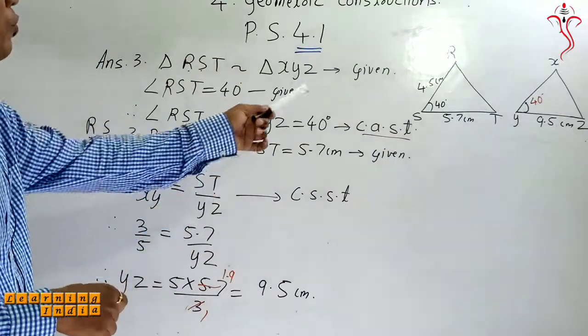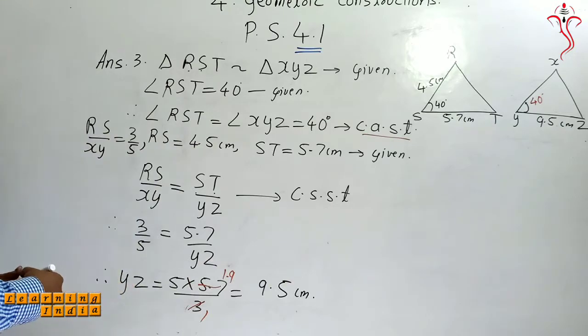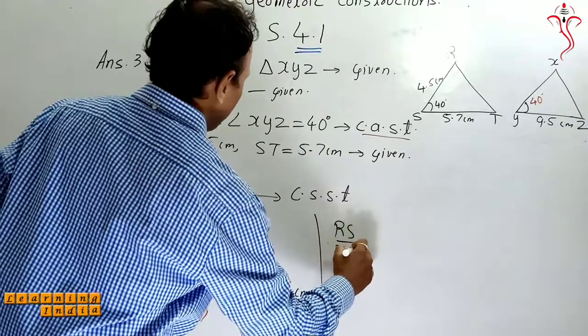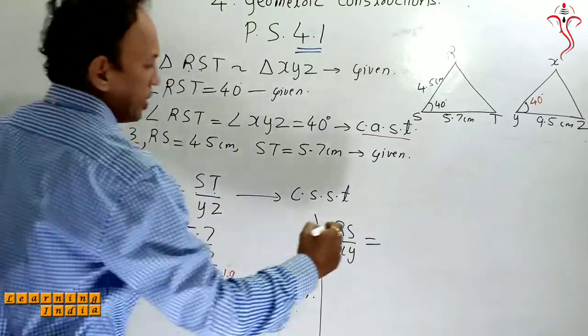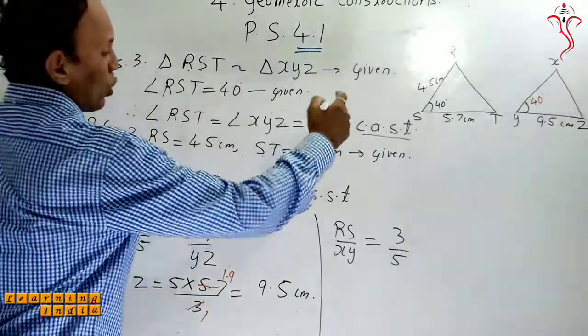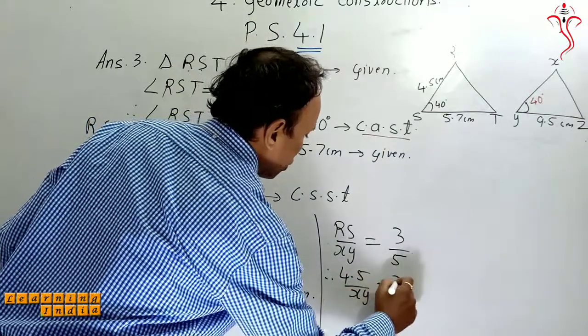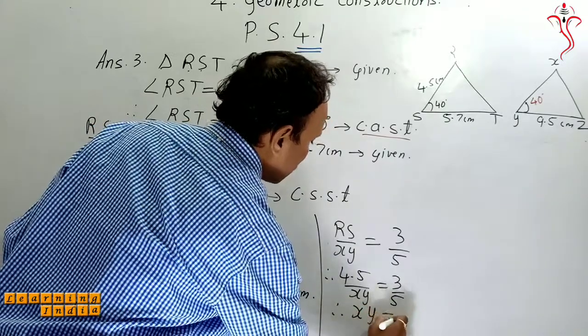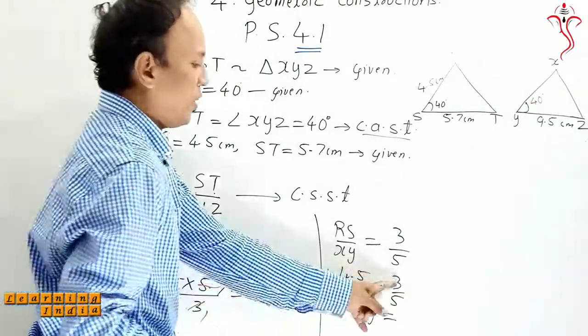So YZ value I am 9.5 cm. Now RS value, YZ value 4.5, RS value, XY what we have to do? We are taking RS upon XY is equal to 3 upon 5. So RS value is 4.5, so 4.5 upon XY is equal to 3 upon 5. So my XY value will be XY is equal to 4.5 multiply by 5, divided by 3.